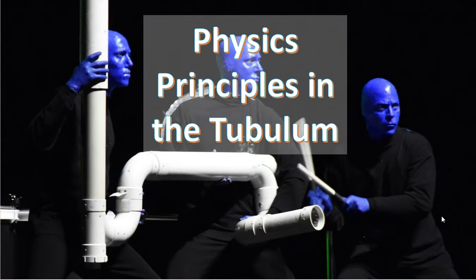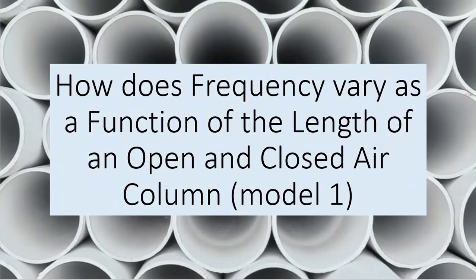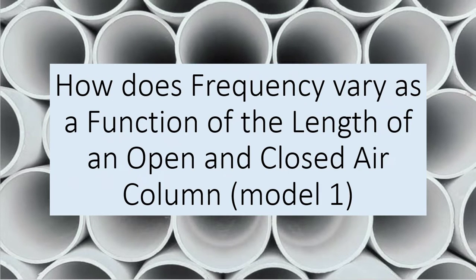Hi everyone, this is our third video on the physics principles applied in the construction of a tubulum. For this particular video, the overarching concept is the idea about how the frequency of a particular note relates to the length of that air column, both in an open and a closed air column. We've dubbed this Model One, as it is one of the models we're going to look at in terms of analyzing how standing waves are made in both open and closed pipes.